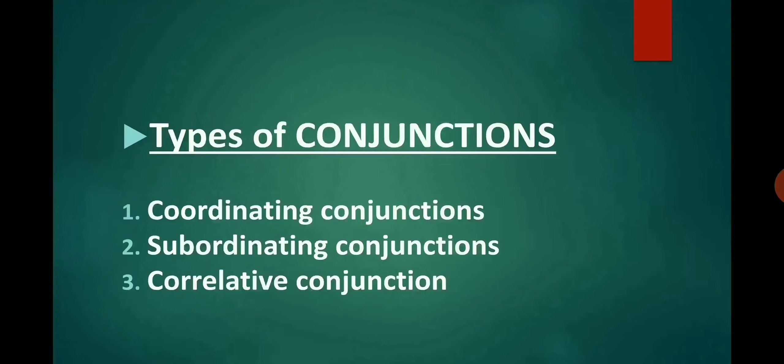Now let's have a look at the types of conjunction. Conjunctions are of three types: first, coordinating conjunctions; second, subordinating conjunctions; third, co-relative conjunctions.